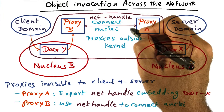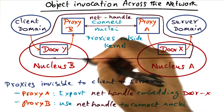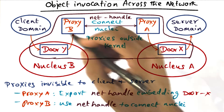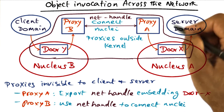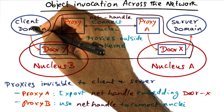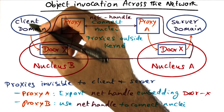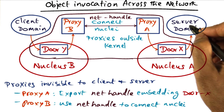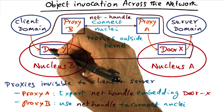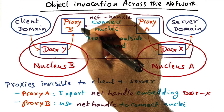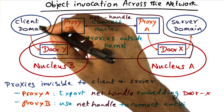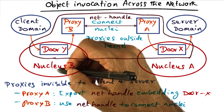The network handle and the communication that goes on between these two proxies is not through the nucleus. Proxy A creates a network handle embedding door X and exports it to proxy B. Proxy B has a door established locally on nucleus B so that the client domain can communicate with it. Proxy B will then use the network handle exported by proxy A to establish a connection between the two nuclei. When the client wants to make an invocation, it thinks that when it is accessing door Y, it is accessing the server's domain, but it isn't — what it is actually accessing is proxy B.